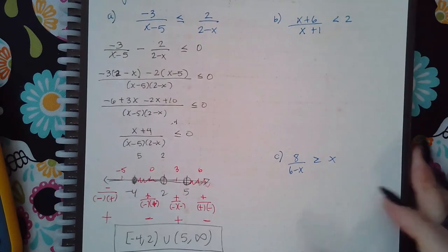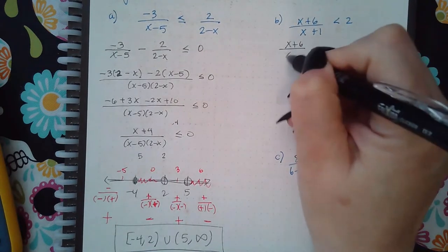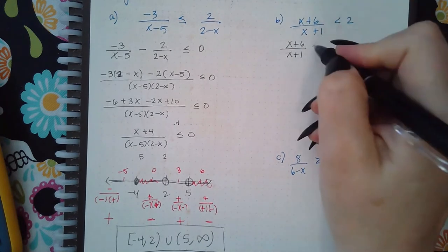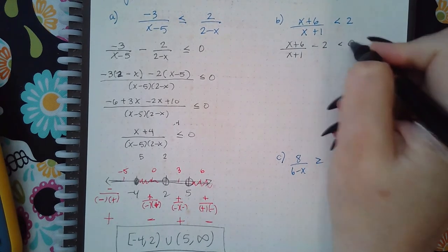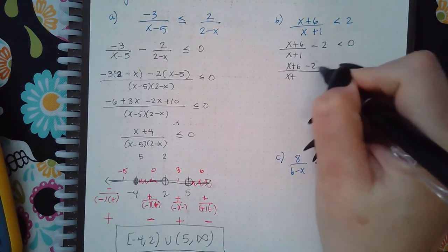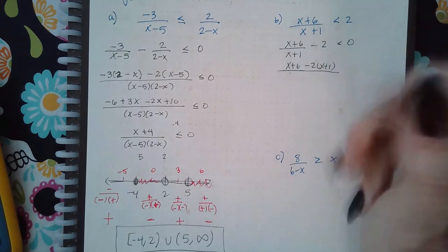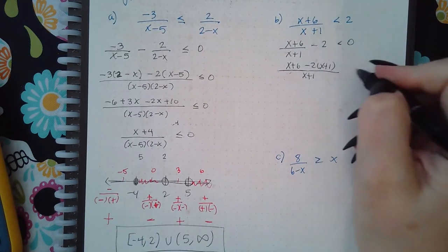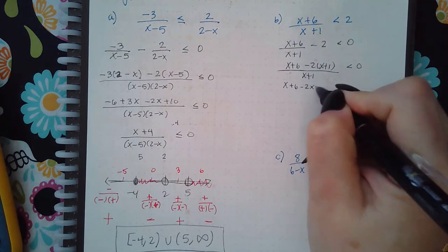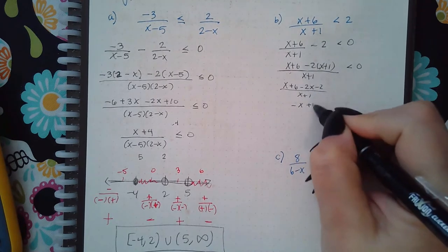Now for the next problem: we're going to move the 2 over, and this one's a lot like the previous problem type 1, but I have to get a common denominator. So I have x plus 6 minus 2x minus 2, which means negative x plus 4.